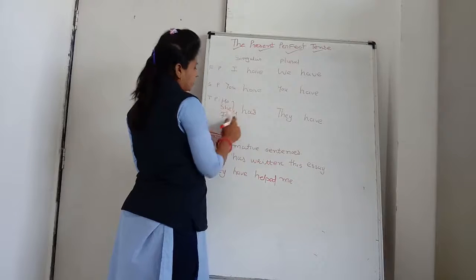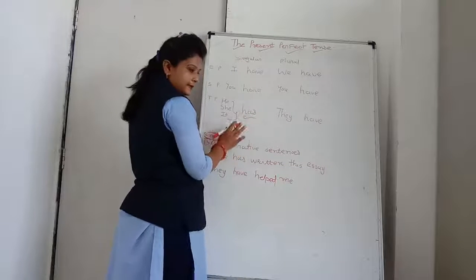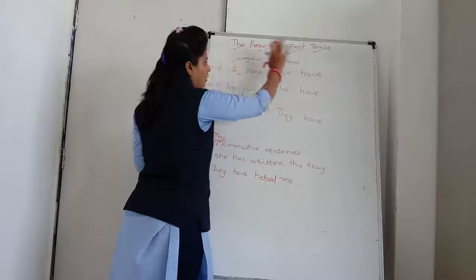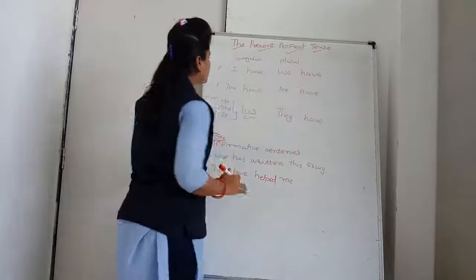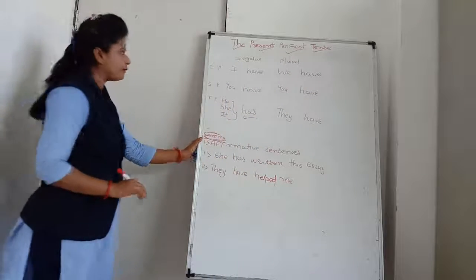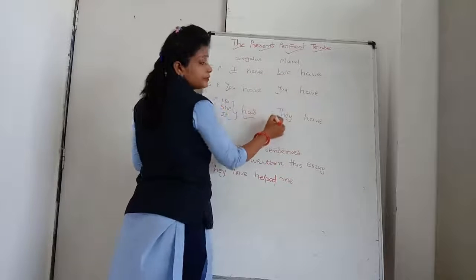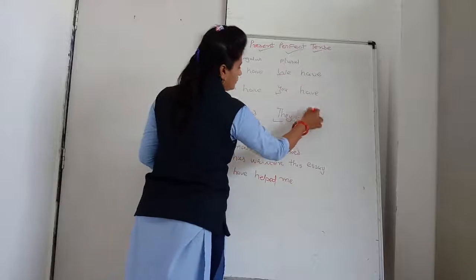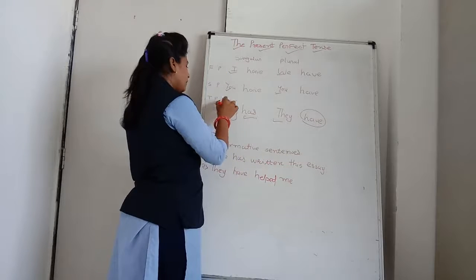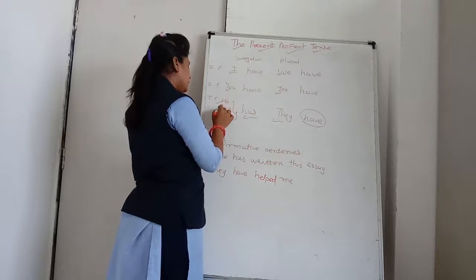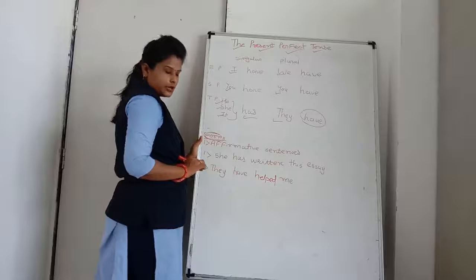With third person singular we use has. Otherwise, with all other persons we use have. With I, we, you, you, they we use have. And with third person singular he, she and it we use has.